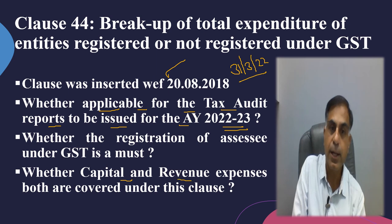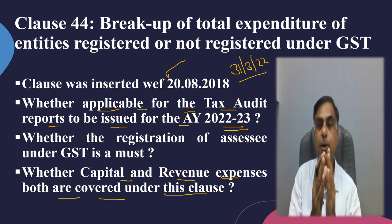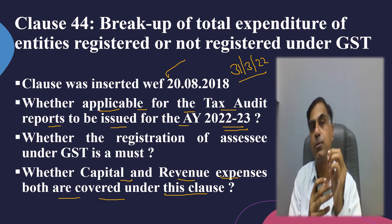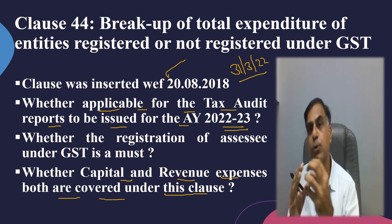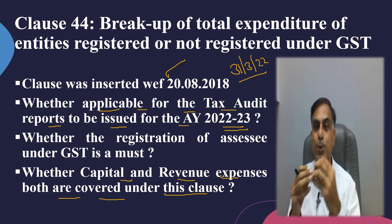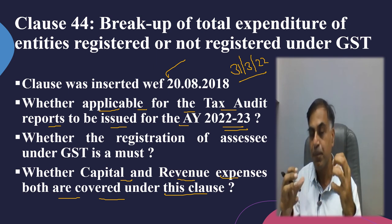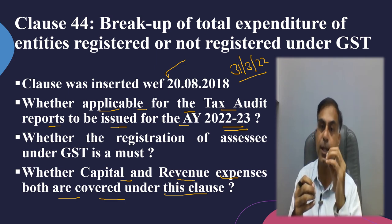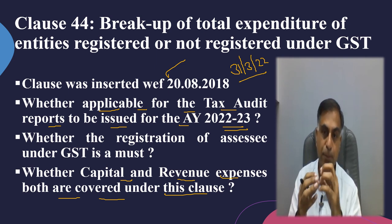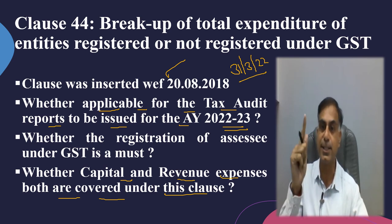A very important question is whether both capital and revenue expenses are covered under this clause. The answer is very straightforward: since the term used in the Clause 44 description is 'breakup of total expenditure,' it is immaterial whether it is revenue expenditure or capital expenditure — both kinds of expenditure should be offered for reporting in Clause 44. This is a very important takeaway to carry while finalizing Form 3CD.